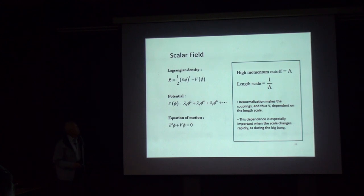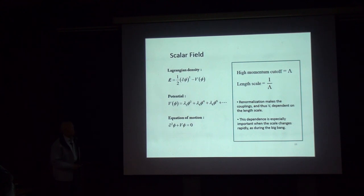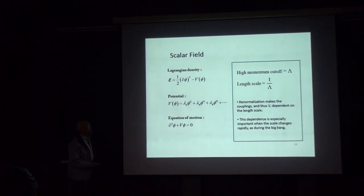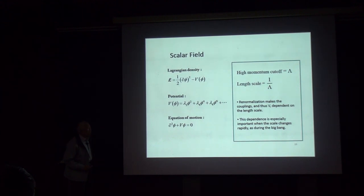The scalar field is expressed by a Lagrangian: kinetic energy minus a potential term, where the potential is some function of phi, usually expanded in powers. The equation of motion is a nonlinear Klein-Gordon equation. There is a high-momentum cutoff Lambda, so the coupling and the potential depend on the length scale one over Lambda.